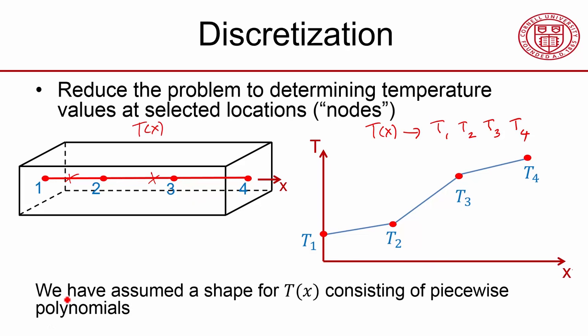And in the process, what we have done is we have assumed a shape for our function. And that shape consists of piecewise polynomials, piecewise linear polynomials.